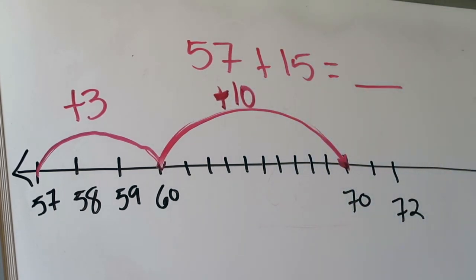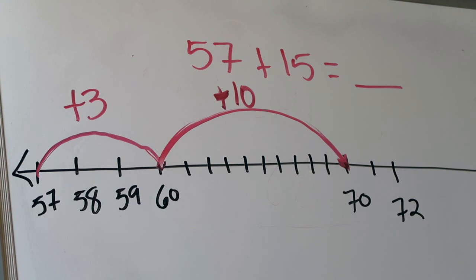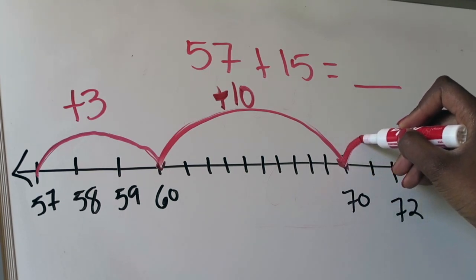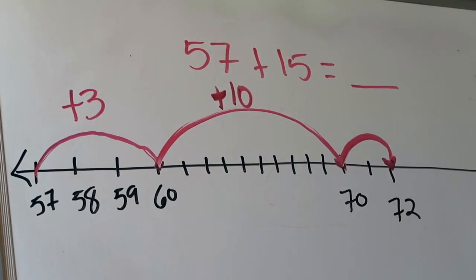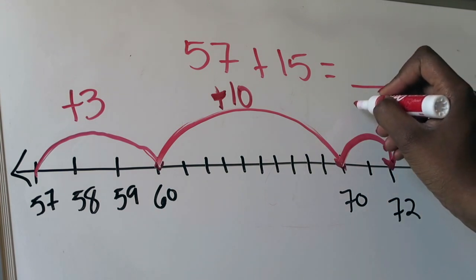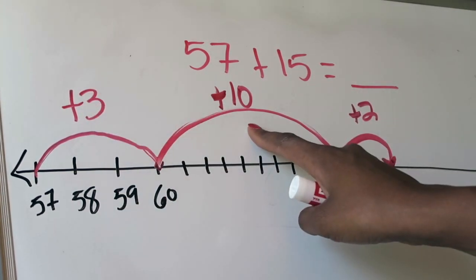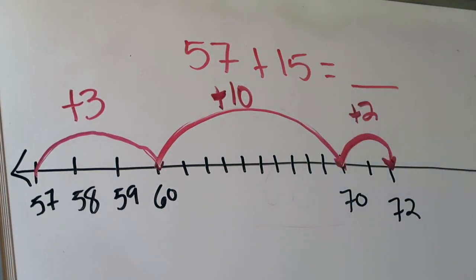I'm still not done because that only represents me adding three and 10, or 13, to the number 57 — but I need to add 15. So I recognize: 10 jumps plus another three jumps is 13. Now all I need to do is make two more jumps to get to that magic number of 15 total jumps. So this is 13 jumps, 14, 15 ends up right here. That was two more spots. So three jumps plus 10 jumps was 13, and 13 plus another two jumps is 15. I've met the requirement of jumping 15 times on this number line.